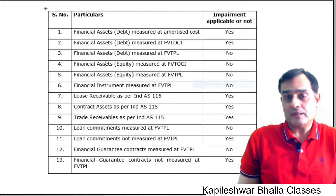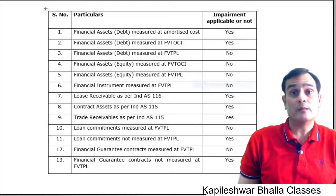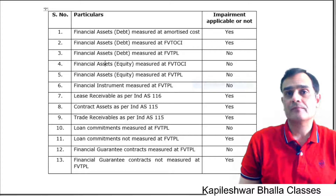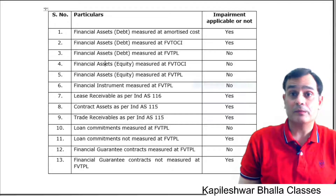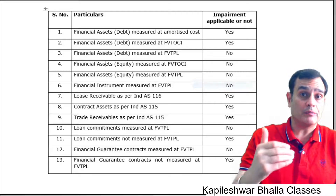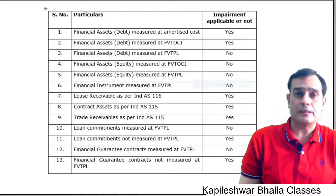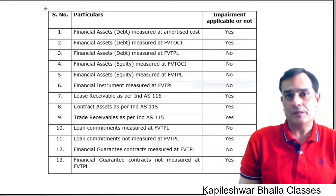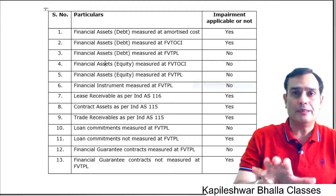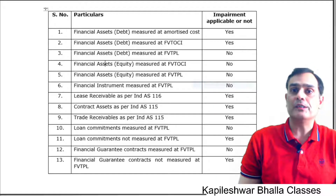There are a couple of other financial assets also covered under the ECL model — items 7, 8, and 9. Whether it is trade receivables, lease receivables, or contract assets: trade receivables arise under Ind AS 115, lease receivables arise under Ind AS 116, and contract assets also arise under Ind AS 115. The ECL model is applicable to all three of these assets.